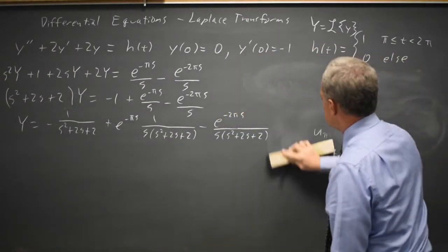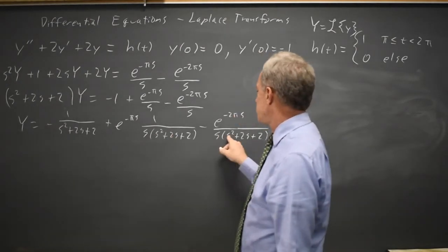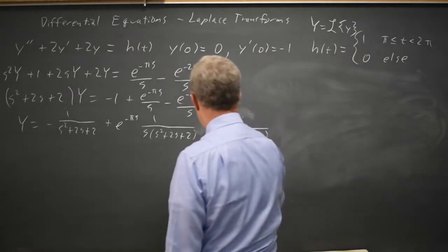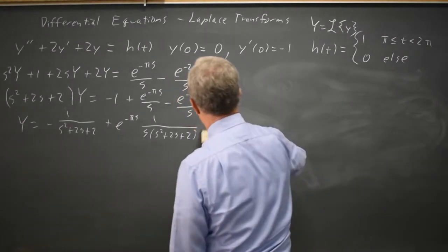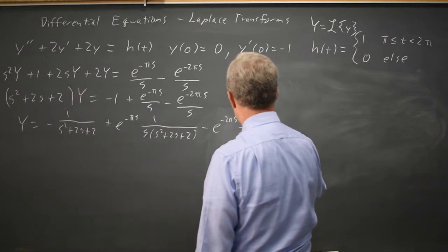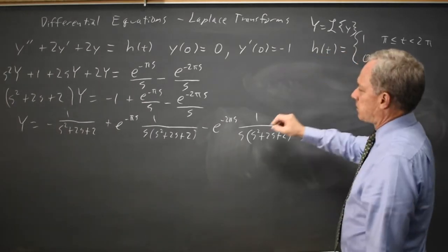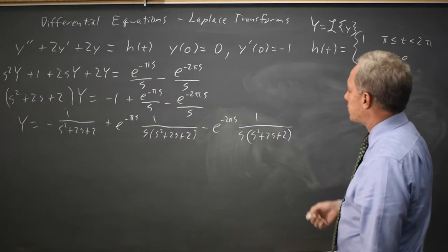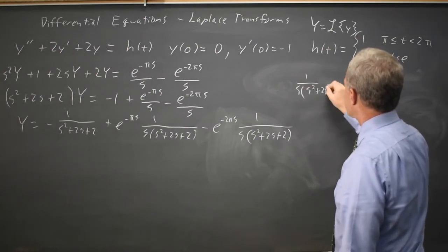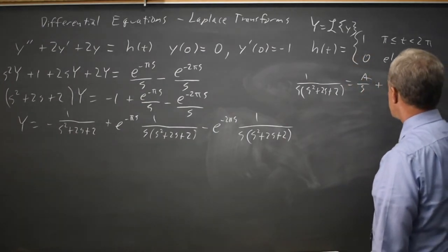I'm erasing this so I can use the space for partial fractions. I want to rewrite these two terms — let me rewrite the whole expression. I found it is much safer to pull the e to the minus cs out of the numerator. So I need to decompose 1 over s(s squared plus 2s plus 2), which equals A over s plus (Bs plus C) over (s squared plus 2s plus 2).